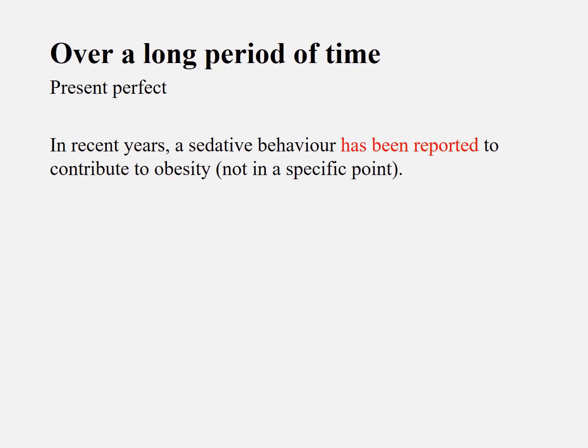If you want to talk about something over a long period of time, you should use the present perfect tense. For example, 'in recent years, sedentary behavior has been reported to contribute to obesity.' This is not a specific time point — it is over a period of time — therefore you should use the present perfect tense.